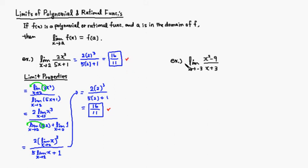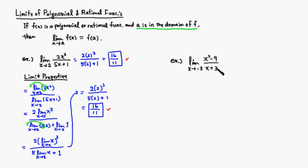However, this method doesn't always work. Looking at the statement carefully, there's a condition: a has to be in the domain of f. What if a is not in the domain? For example, if x is approaching negative 3, then negative 3 is not in the domain because it makes the denominator equal to 0. So this result does not apply in that case.